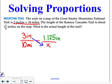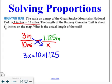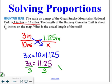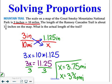Then, you're going to use that cross product property to solve. So, we end up with 3x is equal to 10 times 1.125. Continuing to solve, we're going to simplify and get 3x is equal to 11.25. Dividing both sides by 3 gives us a final answer of x is equal to 3.75 miles. Or, you could say x is equal to 3 and 3 fourths miles if you prefer to give the answer in fraction form.